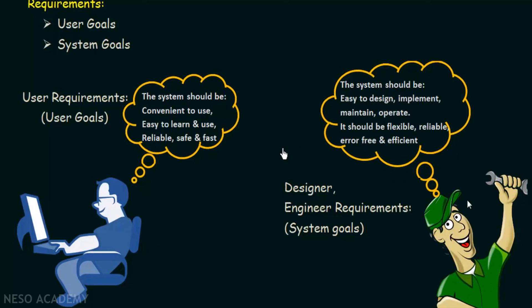These are very general and vague terms. We actually don't have any particular formula or principle to follow in order to achieve all these requirements. There are no particular rules or instructions that make the system easy to learn, convenient to use, or easy to design. In short, there is no particular solution to specify or meet all the requirements in designing an operating system.